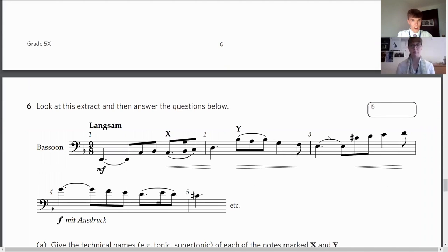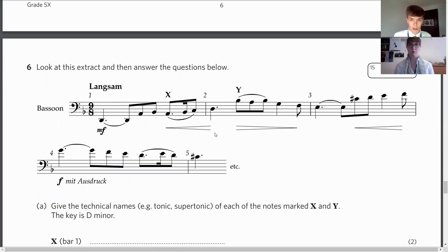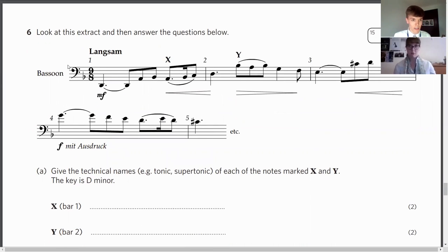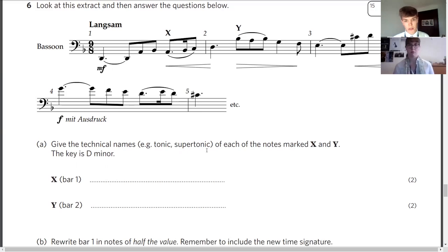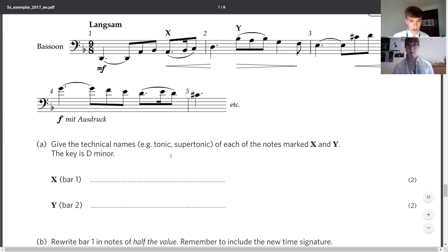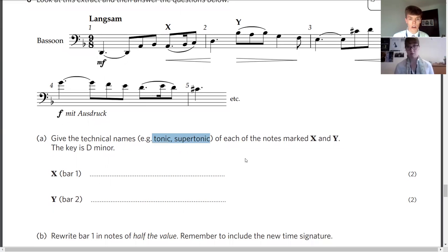Question number six: Look at this extract and then answer the questions below. We've got an extract here just for bassoon. Again, key things to look out for, all the usual stuff. Give the technical names, for example tonic or supertonic, of each of the notes marked X and Y. X is in bar one, Y is in bar two. What are the technical names for these notes? Remember, you need to be thinking about what key we're in. And then of course you need to remember what all of these technical names are, what order they come in. It does tell you what key it's in. Always read the question. Key is in D minor.